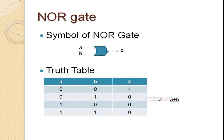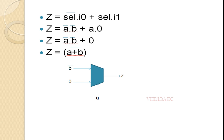The boolean expression of the NOR gate is Z = (A + B)_bar. We are connecting B_bar to I0, A to I1, and 0 to select respectively. Replacing those values in the MUX expression: Z = select_bar · I0 + select · I1 becomes Z = A_bar · B_bar + A · 0. Since A · 0 = 0, we get Z = A_bar · B_bar. Applying De Morgan's law gives Z = (A + B)_bar, which is exactly the NOR gate boolean expression.